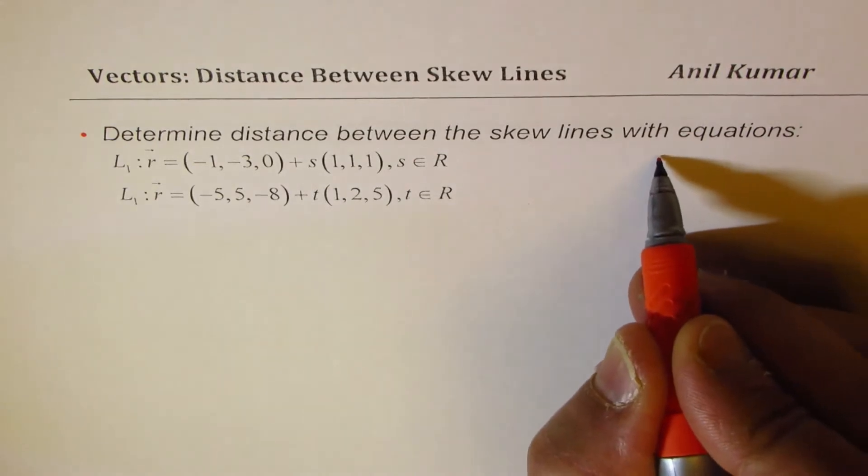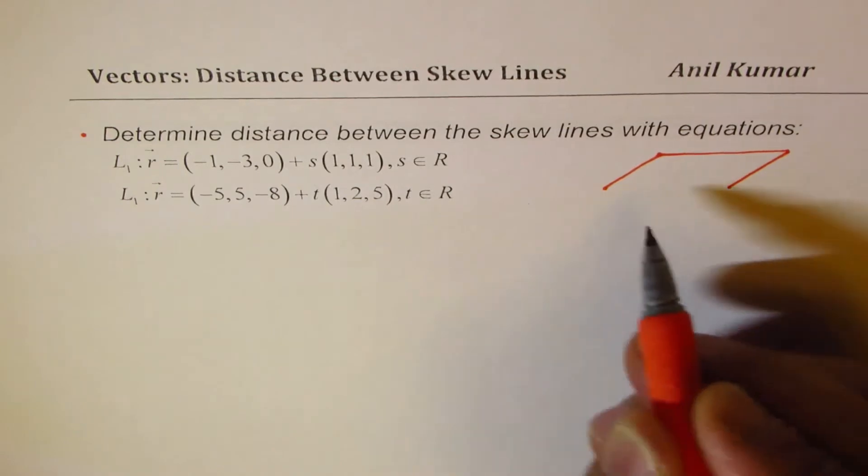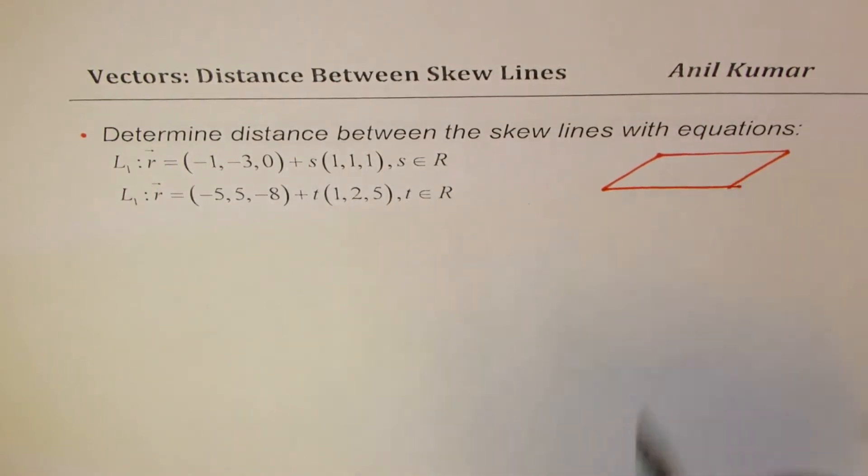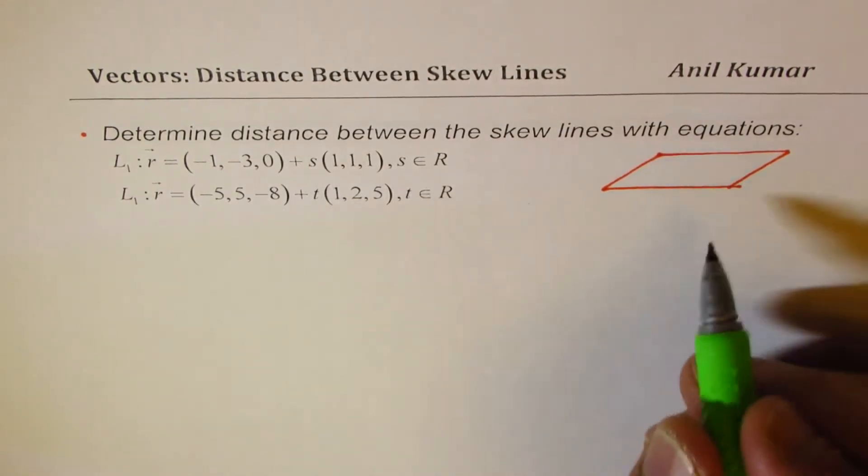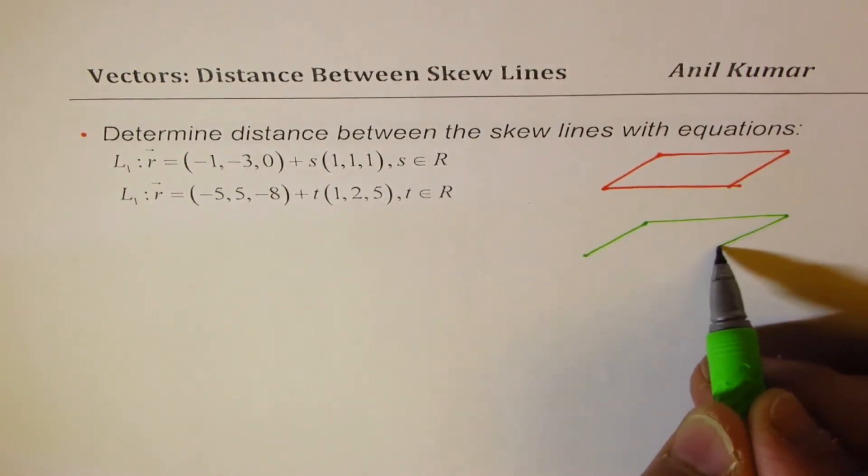Let us first understand what are skew lines. Now skew lines are lines which are in planes which are parallel, so parallel planes. Let us say these are the two parallel planes.